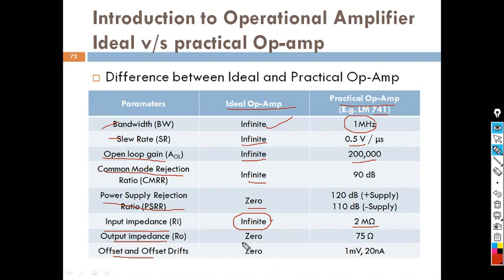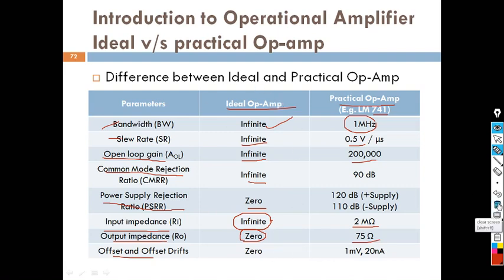Output impedance is zero in the ideal operational amplifier, but practically it is 75 ohms. These are the differences across various parameters with respect to the ideal operational amplifier compared to a practical operational amplifier.